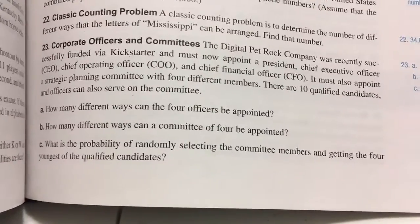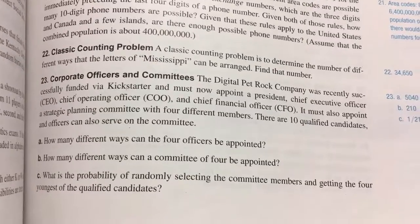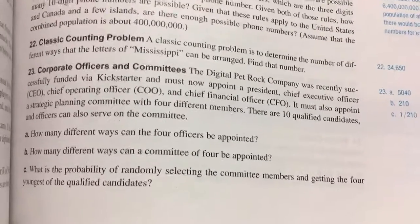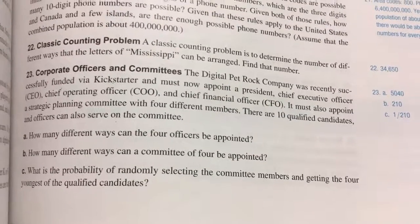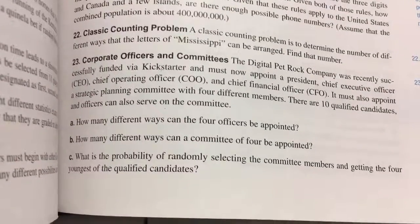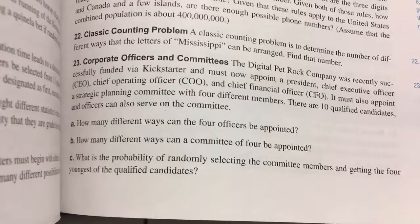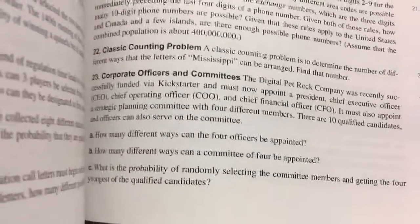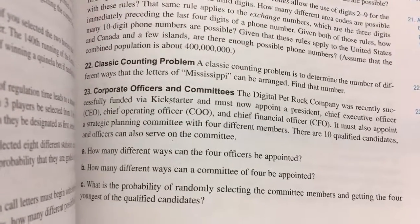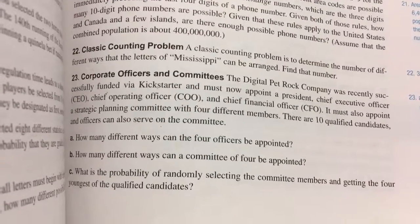The last one for this section is 23, Corporate Officers and Committees. The Digital Pet Rock Company was recently successfully funded via Kickstarter and it must now appoint a President, Chief Executive Officer, Chief Operating Officer, and Chief Financial Officer. It must also appoint a Strategic Planning Committee with four different members. There are 10 qualified candidates and officers can also serve on the committee. How many different ways can the four officers be appointed? In this case, the officers are going for different positions, so it would seem that order would matter. They're all going for different positions, so order matters in this one. So we're going to use a permutation of the 10 qualified candidates choosing four to be officers.